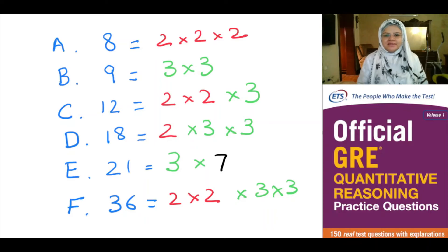Option D equals 18, which is a multiple of 2 × 3 × 3. Option E equals 21, which is a multiple of 3 × 7. Option F equals 36, which is a multiple of 2 × 2 × 3 × 3.